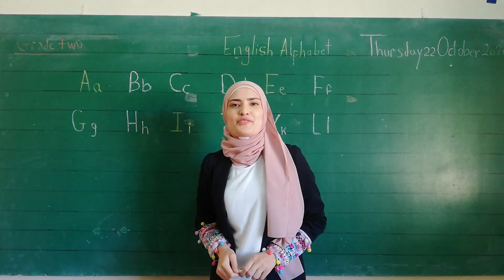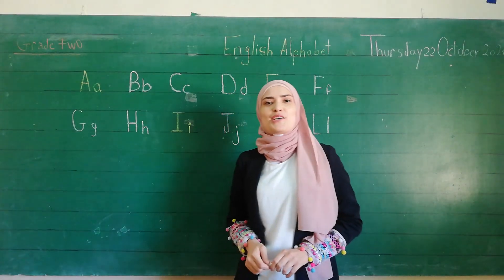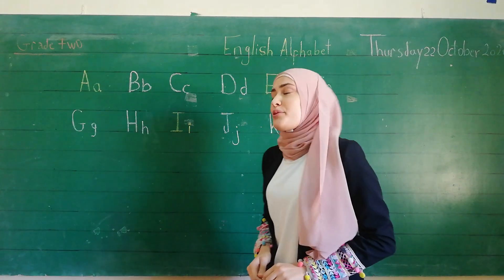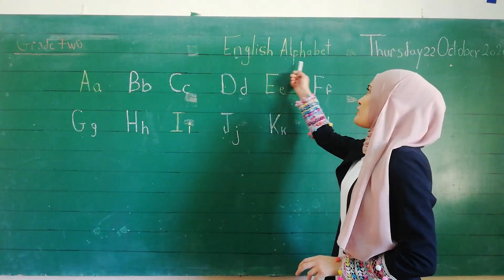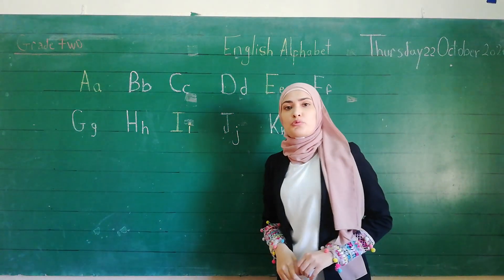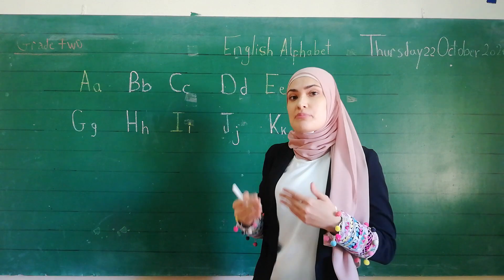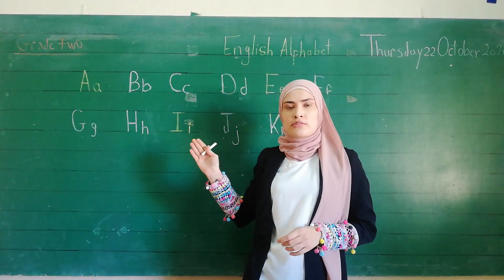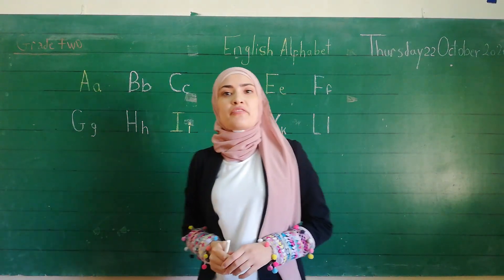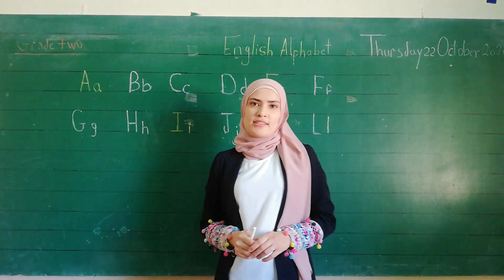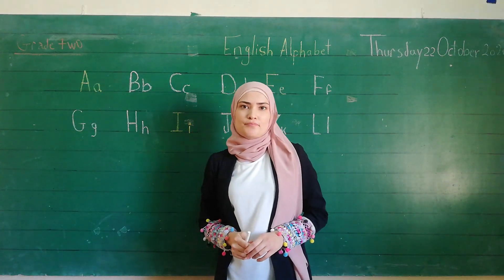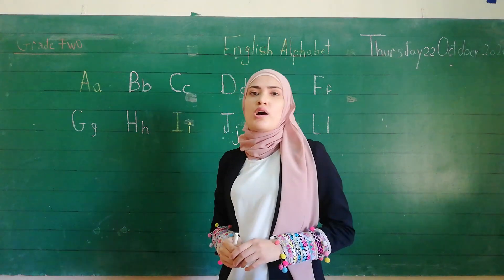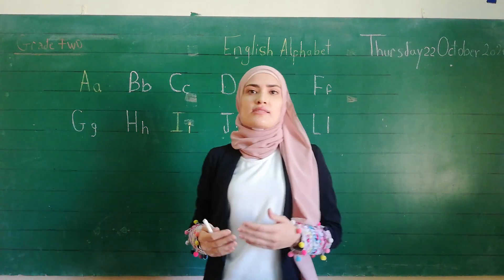Good morning everyone. Hello. Today we will make a small revision and talk about the letters. First, we have in English 26 letters: 5 vowels and 21 consonants.